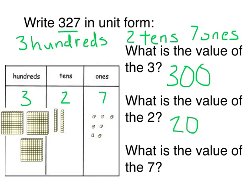What is the value of the seven? Seven is in the ones place, so I can count by one: one, two, three, four, five, six, seven. The value of the seven is just seven — seven ones.